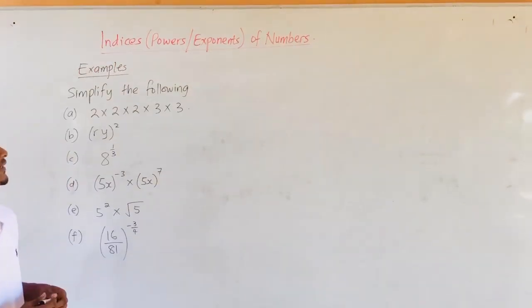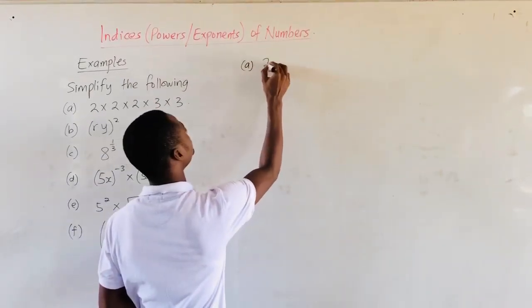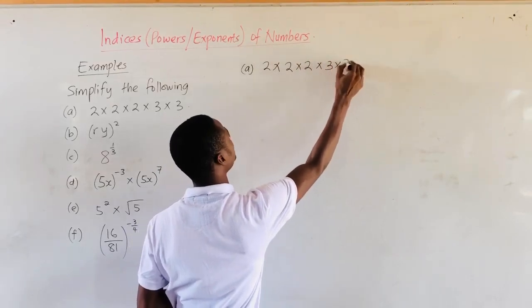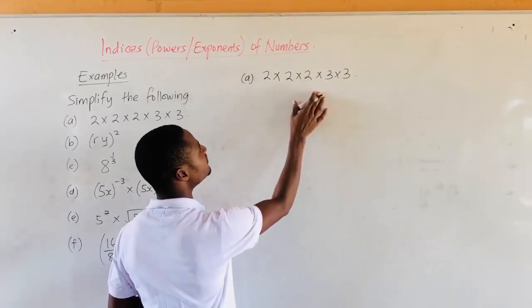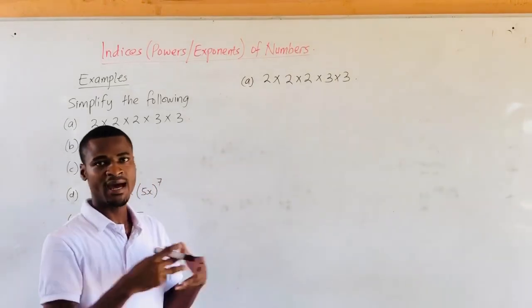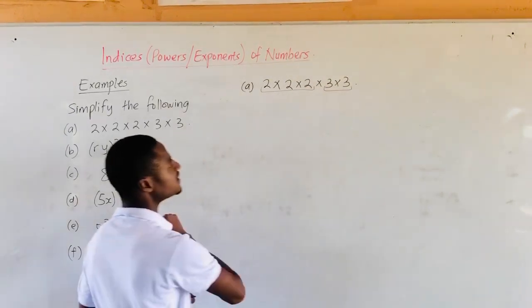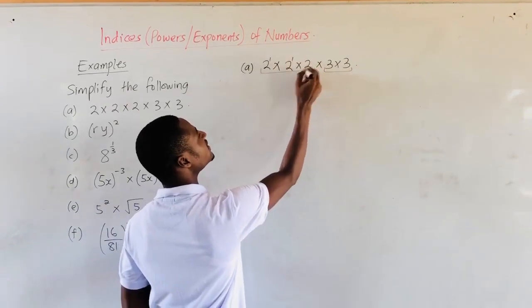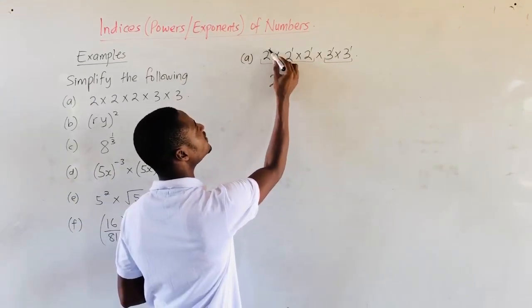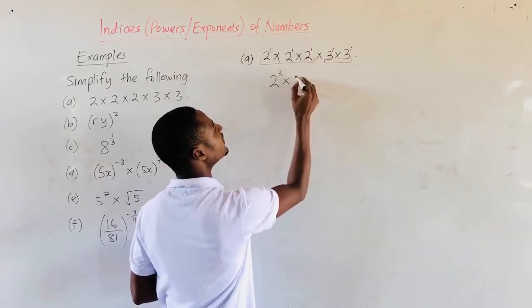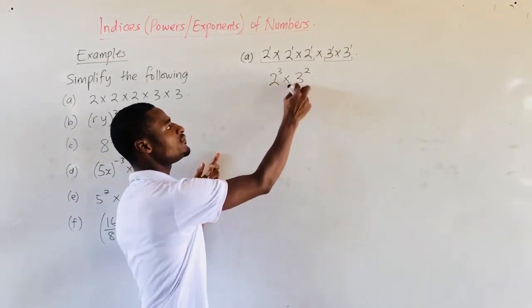Let's go through the following examples. Our first question A: 2 times 2 times 2 times 3 times 3. From the laws of indices, if we have the same base and we are multiplying, we add the exponents. The first three bases are 2, and the last two are 3. Any number without an exponent is raised to the power 1. So we get 2 raised to the power 3 times 3 raised to the power 2. We cannot simplify further because the bases are not the same.